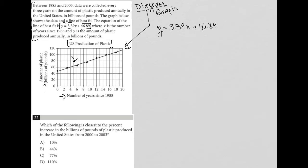Question 22 asks which of the following is closest to the percent increase in the billions of pounds of plastic produced in the United States from 2000 to 2003.